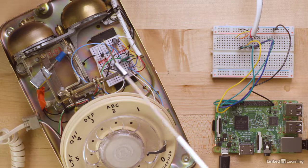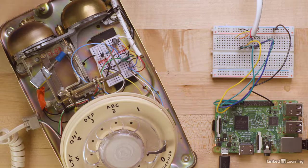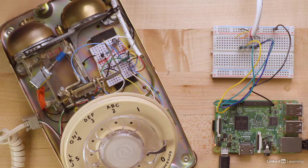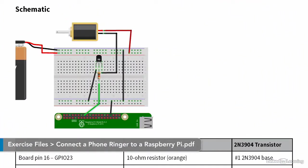On the breadboard in the phone, I reproduced the transistor circuit we covered in the earlier Raspberry Pi video on controlling more than 3 volts. The handout for this chapter includes a diagram of the circuit.